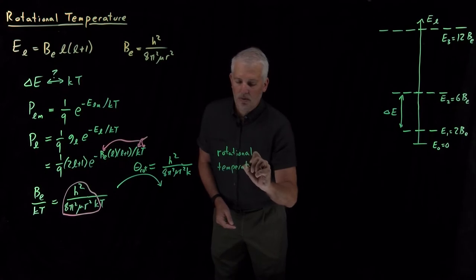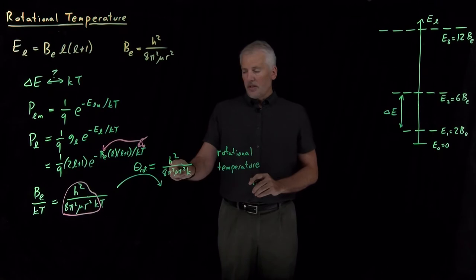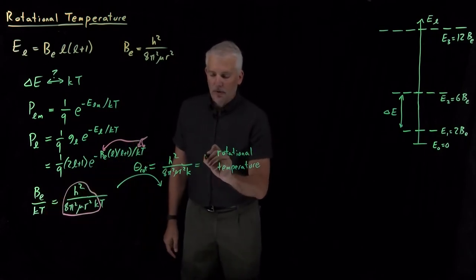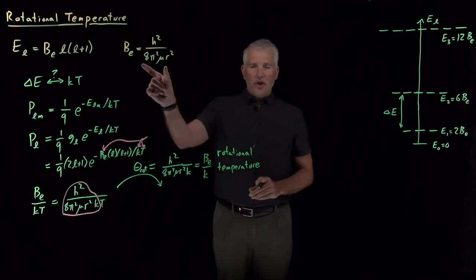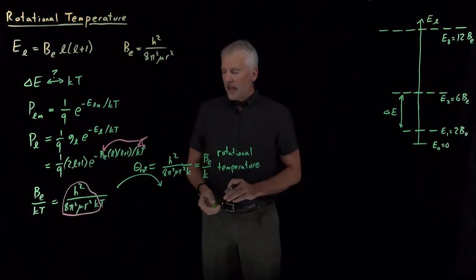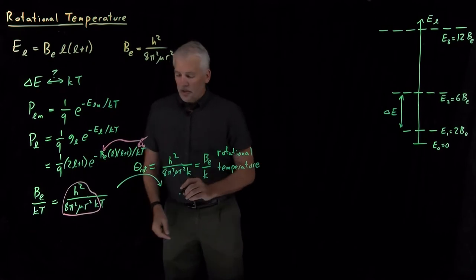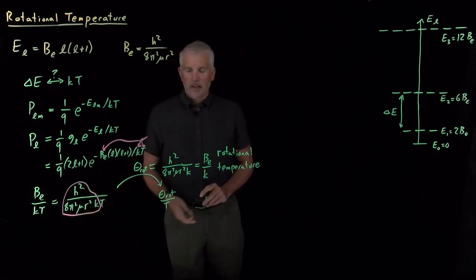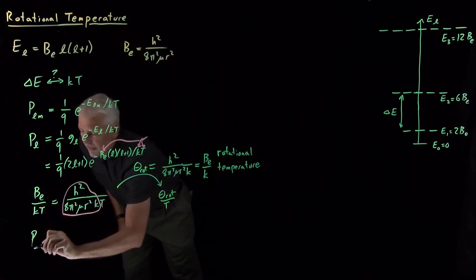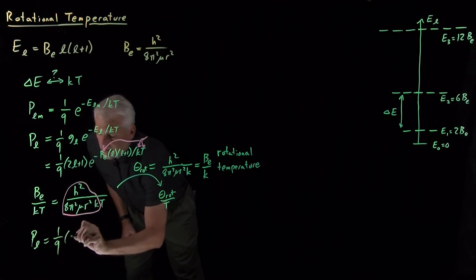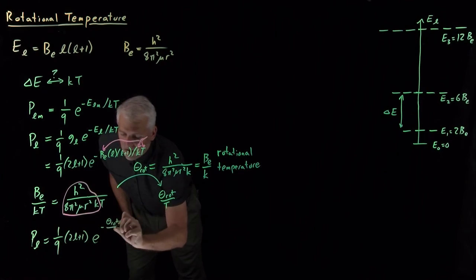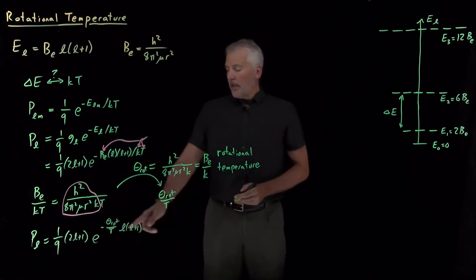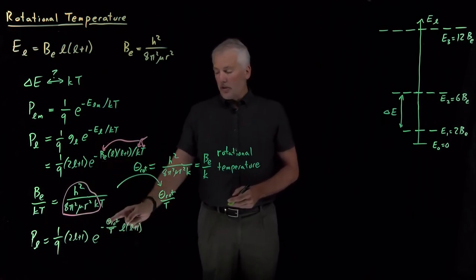We call this new constant capital Θ with subscript 'rotational,' and we call it the rotational temperature. Since most of those constants h²/8π²μr² were already in B_e, the rotational temperature is simply the rotational constant divided by one more factor of k. With this definition, B_e/kT becomes Θ_rot/T, and the probability rewrites as (1/q) times (2L+1) times e^(−Θ_rot/T × L(L+1)).